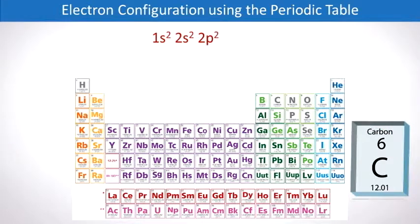And if we clean this up a bit, we find that the electron configuration for 6 electron carbon is 1s2, 2s2, 2p2.